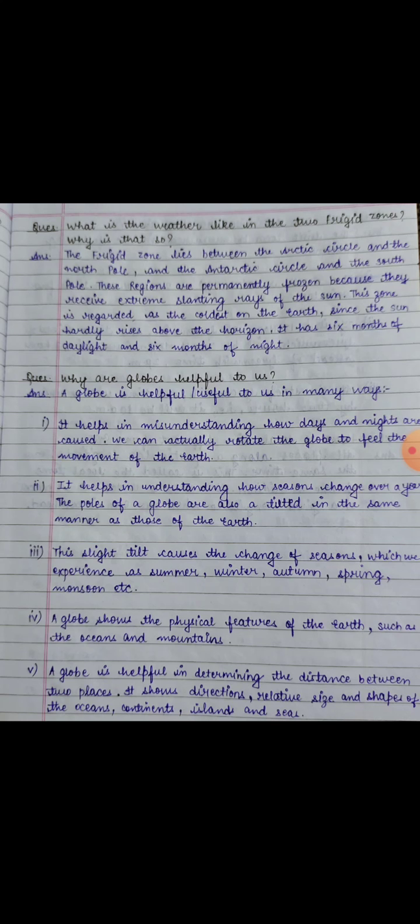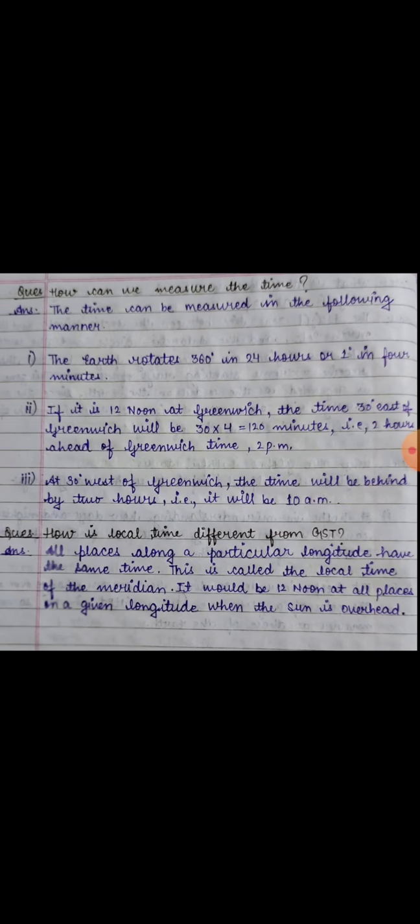A globe shows the physical features of the Earth such as the oceans and mountains. A globe is helpful in determining the distance between two places. It shows directions, relative size and shape of the oceans, continents, islands and seas.